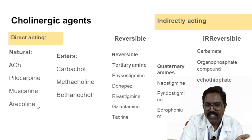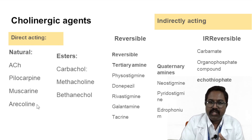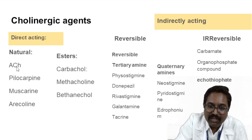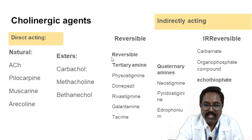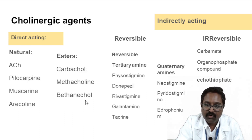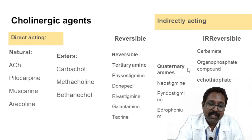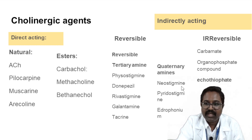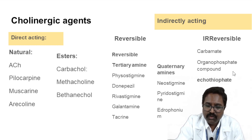Summary of classification: cholinergic agents are classified into directly acting and indirectly acting. Directly acting: naturally occurring alkaloids include acetylcholine, pilocarpine, muscarine, and arecoline; choline esters include carbachol, methacholine, and bethanechol. Indirectly acting (cholinesterase inhibitors): reversible — tertiary amines include physostigmine, donepezil, rivastigmine, galantamine, and tacrine; quaternary amines (water-soluble) include neostigmine, pyridostigmine, and edrophonium. Only physostigmine crosses the blood-brain barrier; neostigmine and pyridostigmine are confined to peripheral action. Irreversible inhibitors include carbamate, organophosphate compounds, and echothiophate.